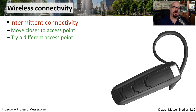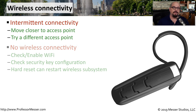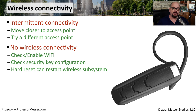Our mobile devices rely on wireless networks to be able to communicate. If you're getting intermittent connectivity with that wireless network, you might want to try moving closer to an access point if this is related to 802.11, or try a different access point. If you're using a mobile device provider's network, the same thing applies — you need to move closer to that particular antenna. If you're not getting any connectivity to your 802.11 wireless network, you may want to check and make sure that Wi-Fi is enabled on that system, or try disabling and re-enabling the Wi-Fi connection. You might also want to make sure that the security parameters you've configured for that wireless network are correct.